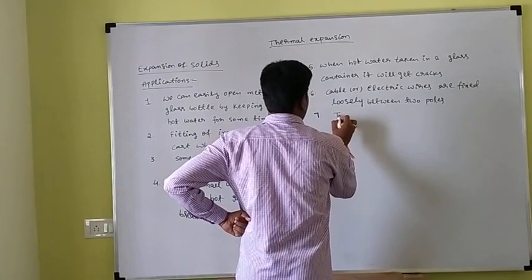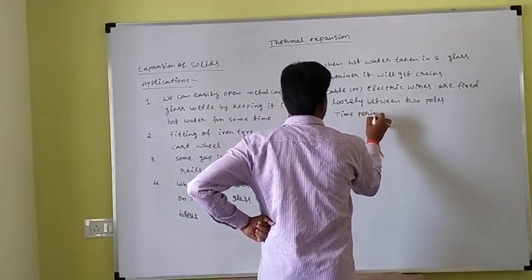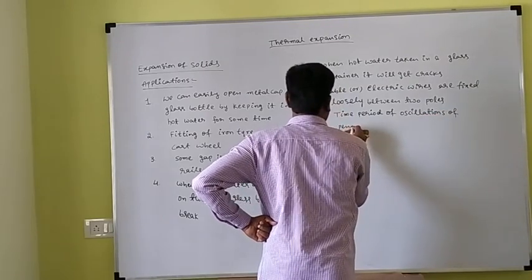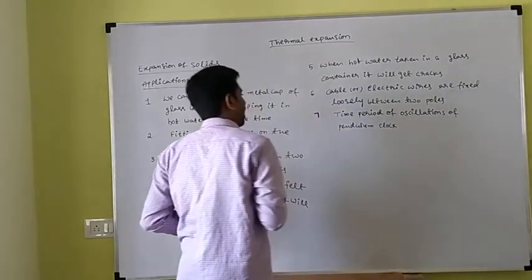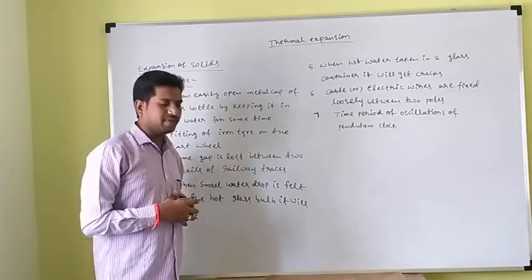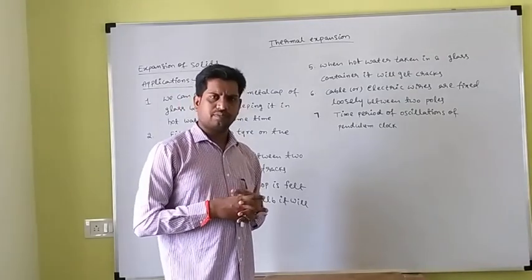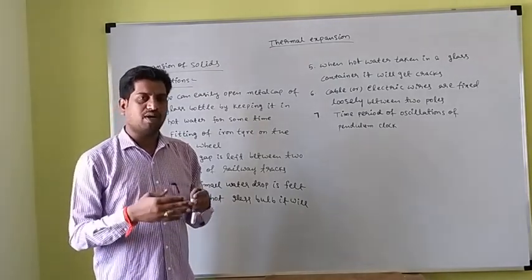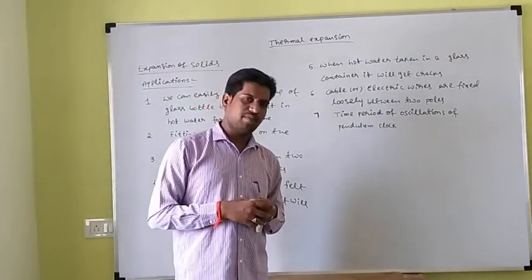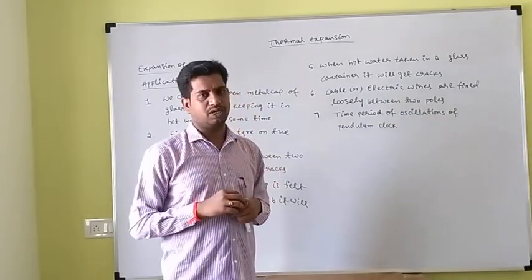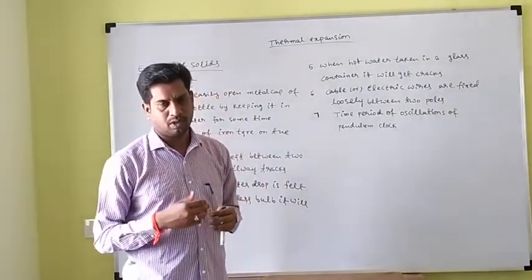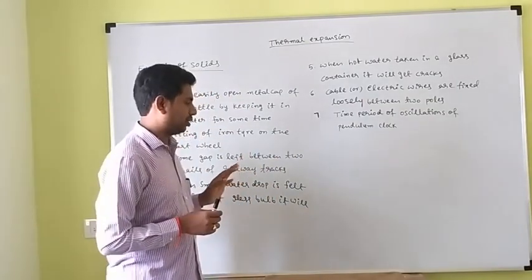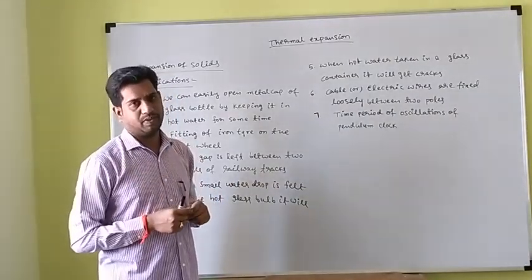Now we will see the time period of oscillation of a pendulum clock. Whenever the pendulum is made of metal, metal is a good conductor of heat so it allows linear expansion. Whenever the temperature changes, especially in winter and summer, there is a change in temperature, causing the pendulum to expand or contract — its length decreases or increases. Due to this, the time period of oscillation changes, giving incorrect time.